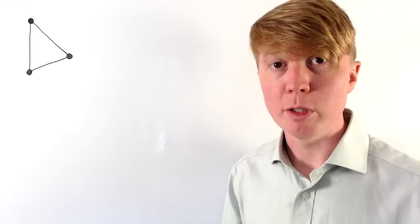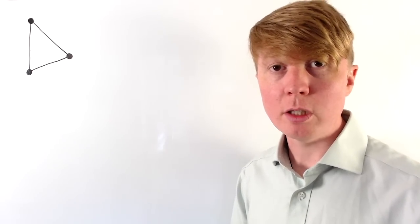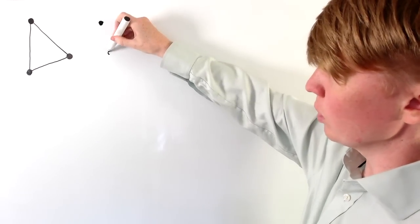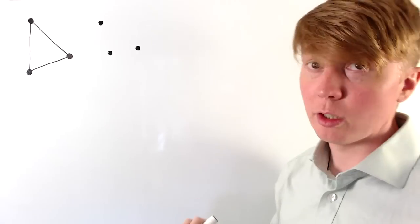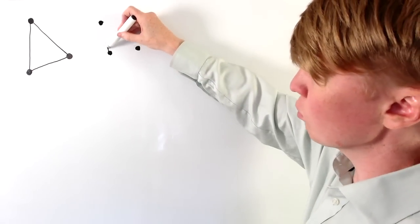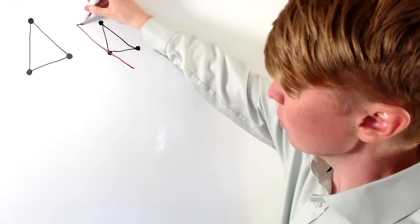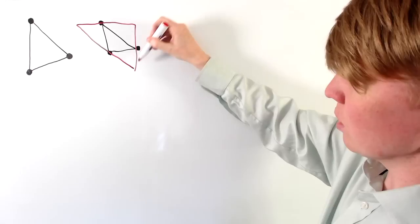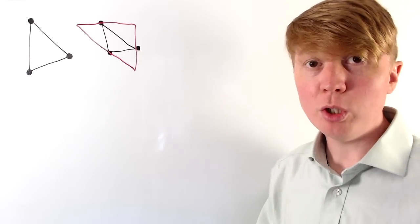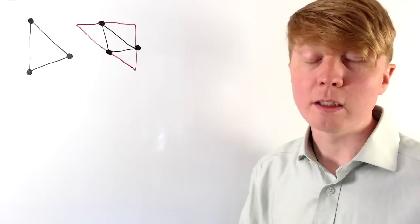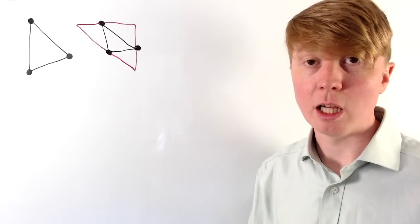We all know that three points will uniquely define a triangle, as long as those three points have to be the vertices. However, if we have three points and we don't say they have to be the vertices — we just say that those three points have to lie on our triangle — then this isn't going to define a unique triangle, because there are any number of possible triangles we could make that use these three points.